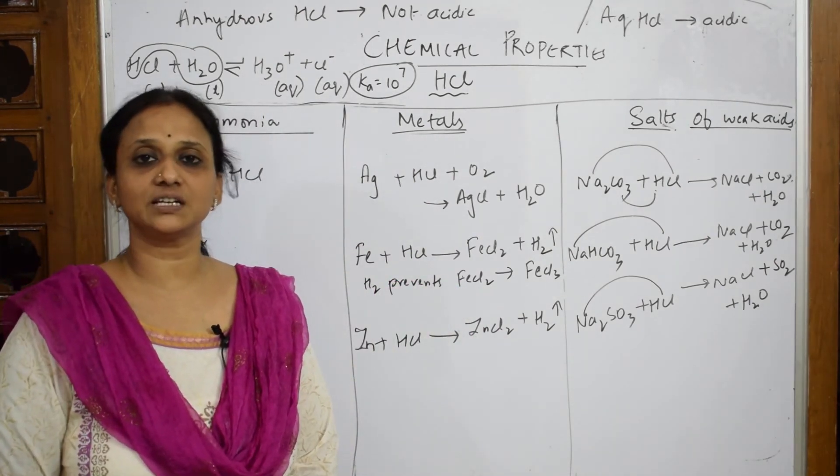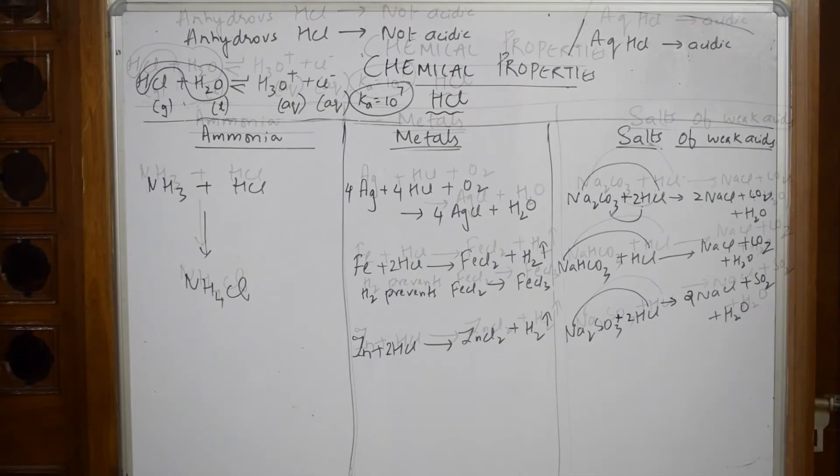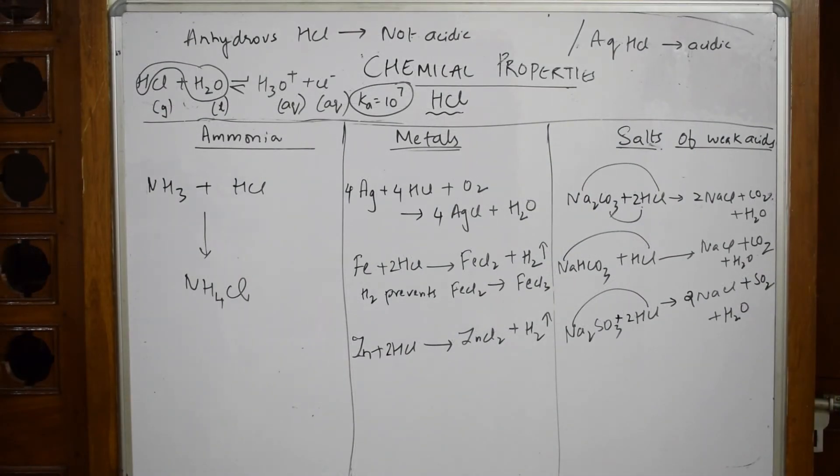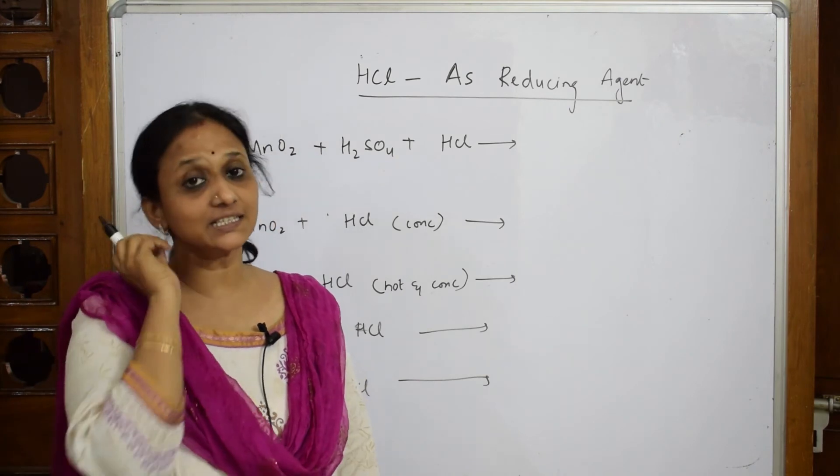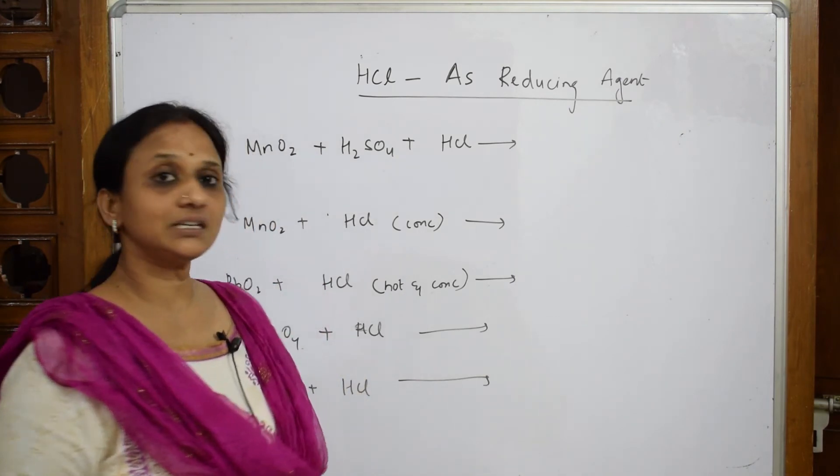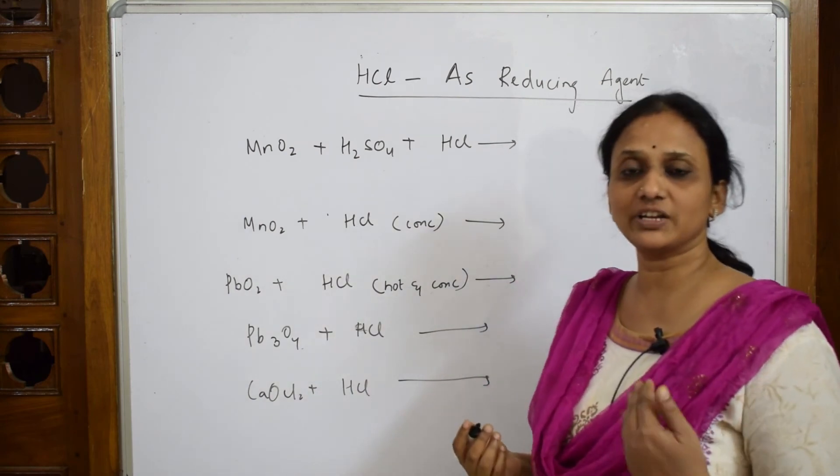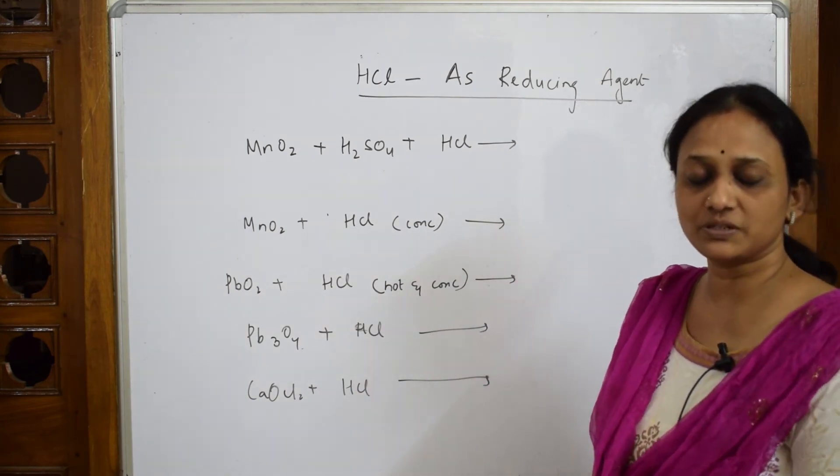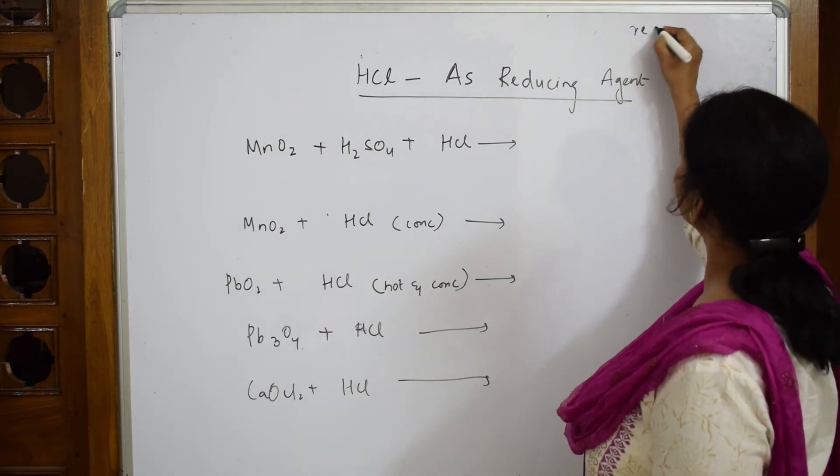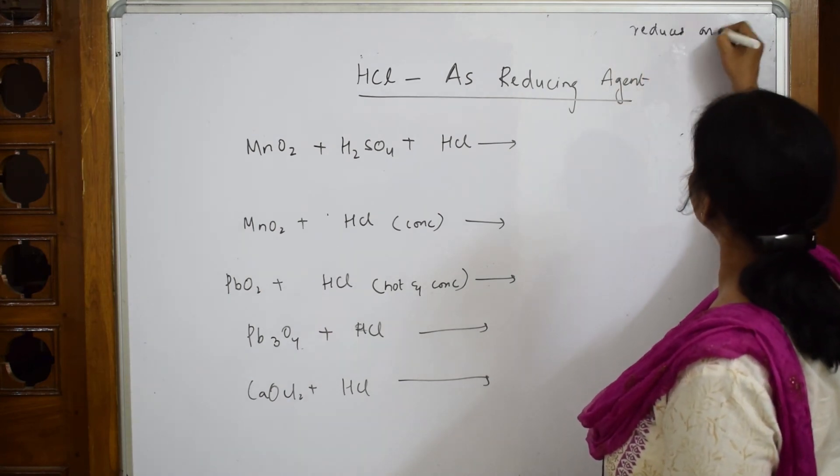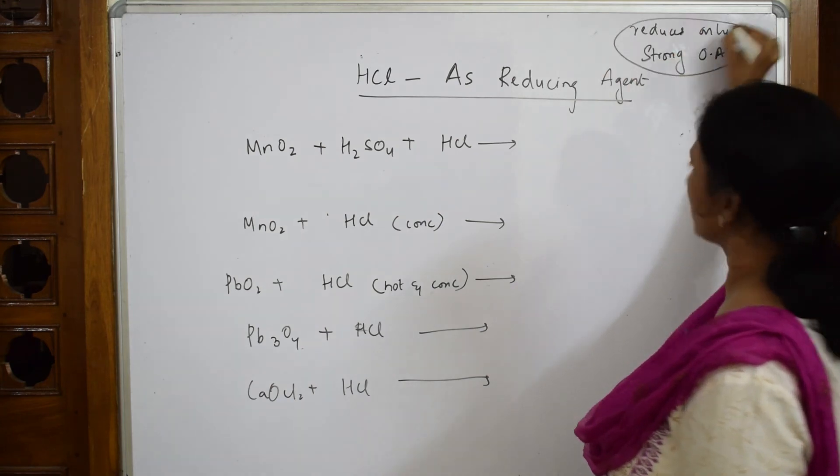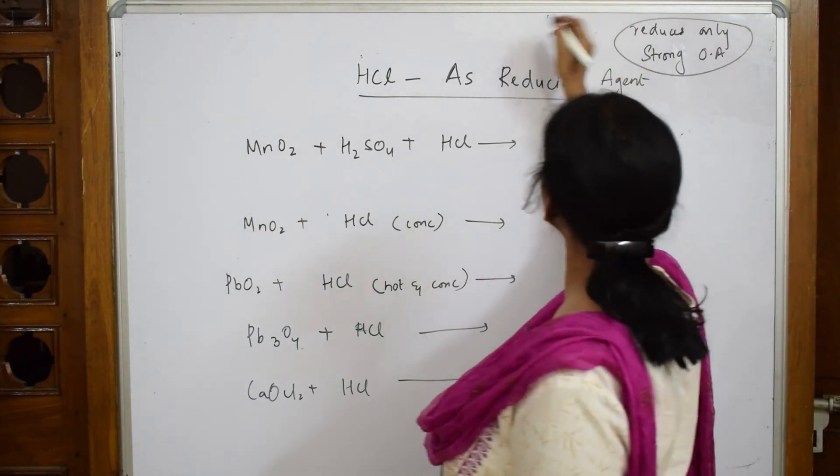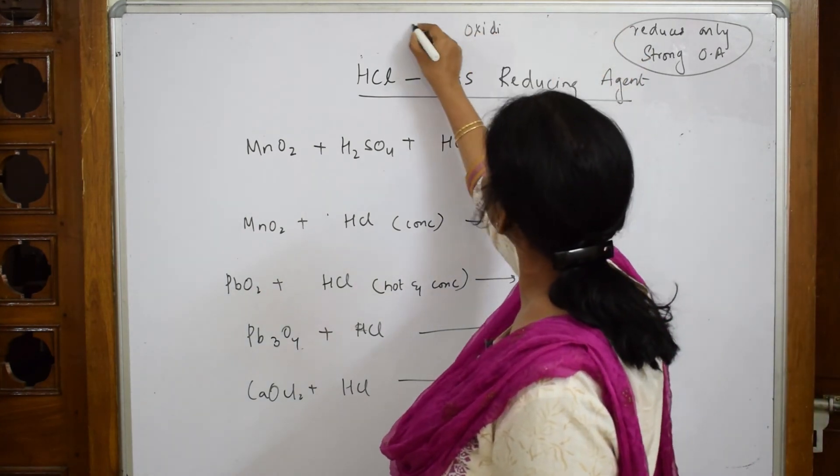Let us come back and see the last important property of HCl, the reducing property. As a reducing agent, HCl when I compare with other halides has a bit lesser reducing property, but what does it do? It's going to reduce only strong oxidizing agents. This is the most important thing. After reducing others, it itself gets oxidized to chlorine.